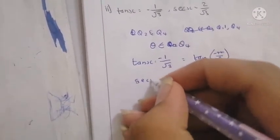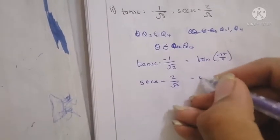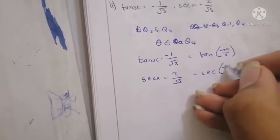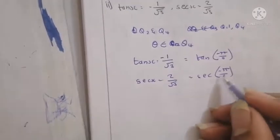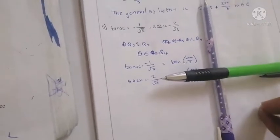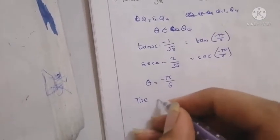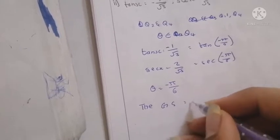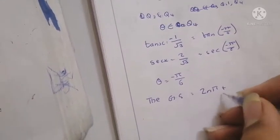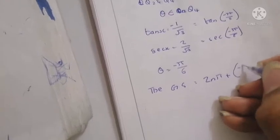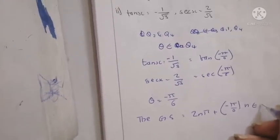sec(x) = 2/√3, satisfied by sec(-π/6). Since -π/6 is in the 4th quadrant, θ = -π/6. The general solution is 2nπ + (-π/6), i.e., 2nπ - π/6, where n belongs to integers.